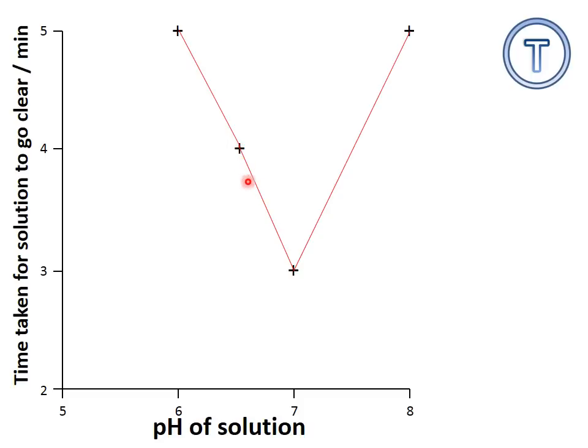For instance, here, this line could go, if I was going to do a curve of best fit, down to here and then up again. It could go down to here and up again. I don't know, so I'd be guessing.